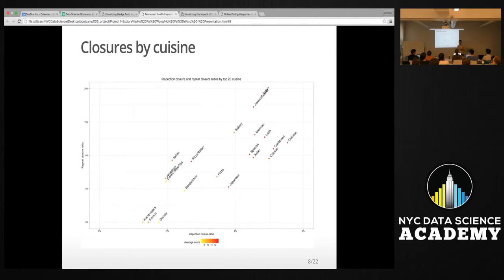So here for the cuisines, New York City categorizes cuisines into 84 categories. So for simplicity, I looked at the top 20, and the top 20 cover about 80 percent of restaurants. So you know, the same inspection closure, repeat closure. The colors are the average score of the restaurants. So right now you can see the scale, it's like 8 to 13, once again because most restaurants fall within that range anyway.